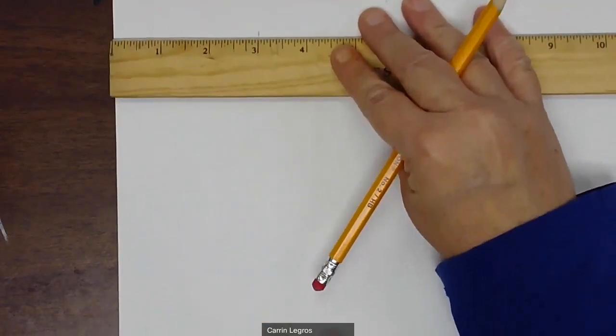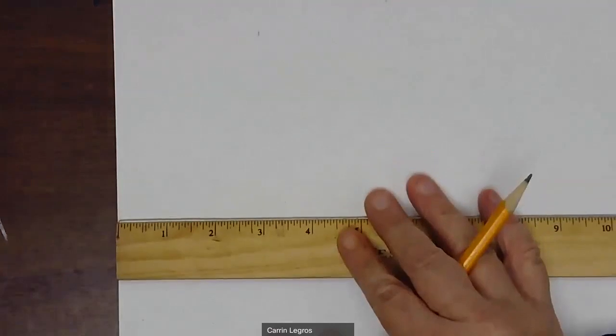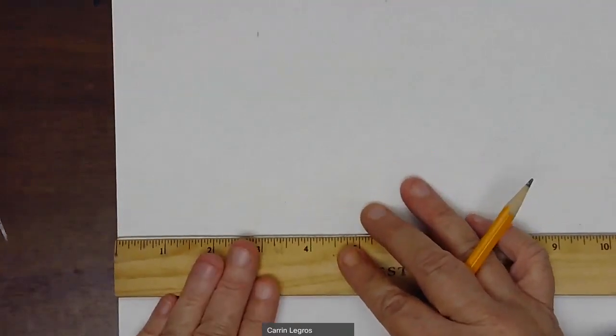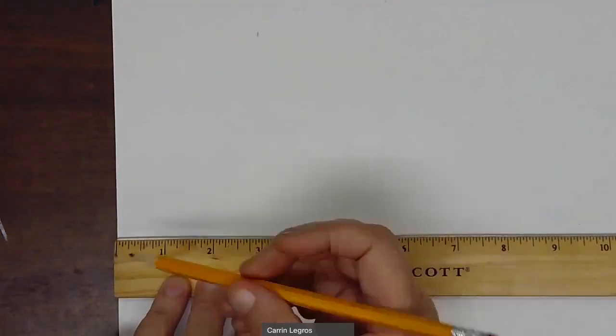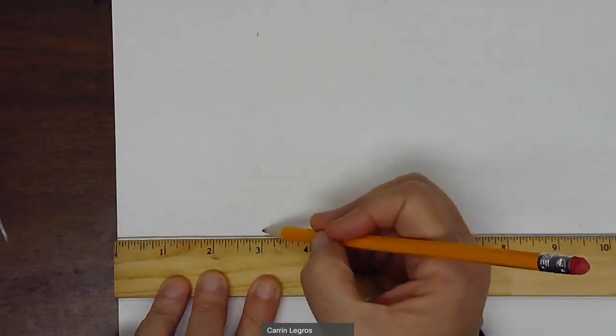I'm going to slide my paper up, slide my ruler down because I want two marks on each side. So match it with the zero and mark above the three.